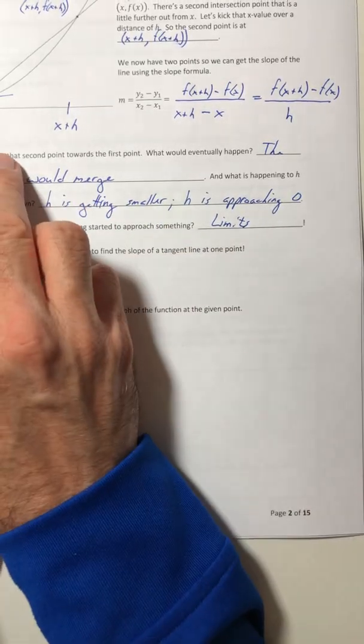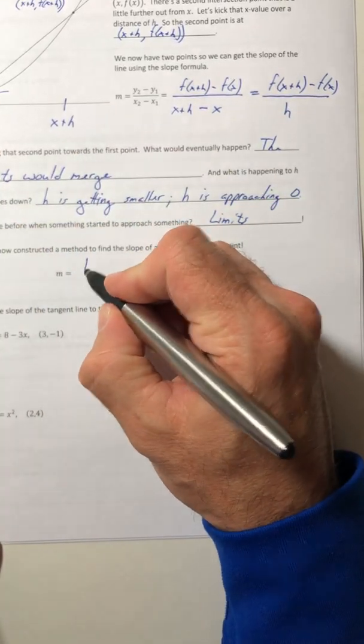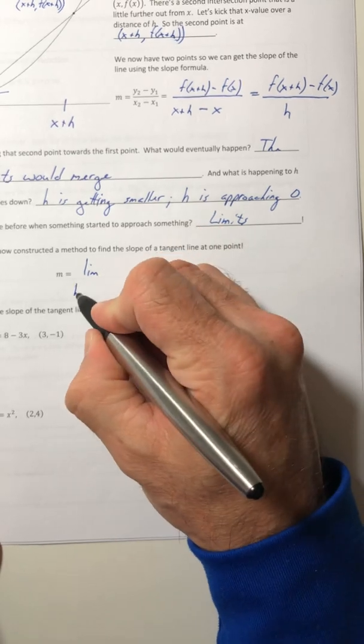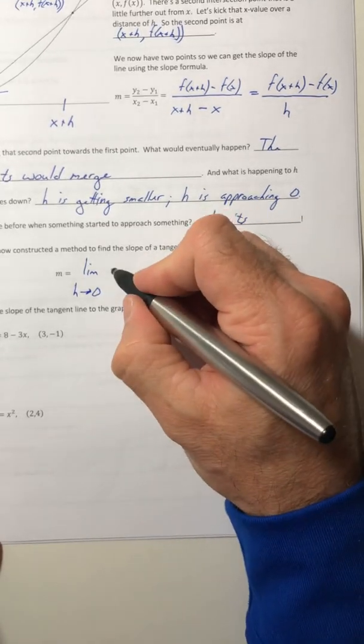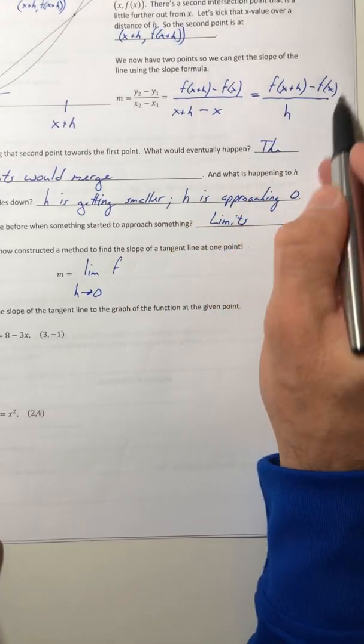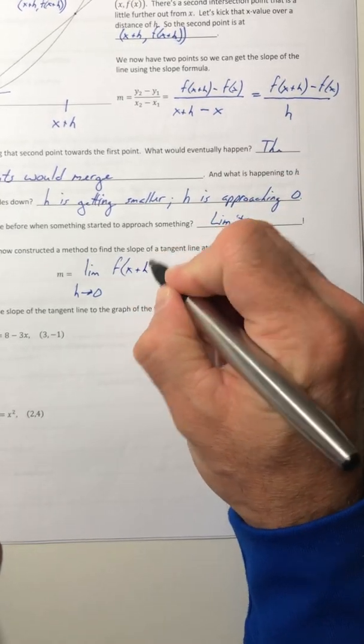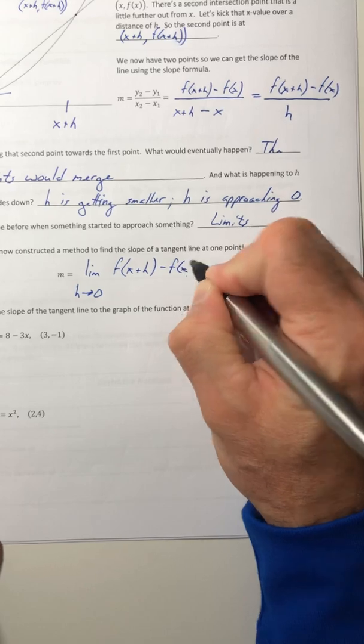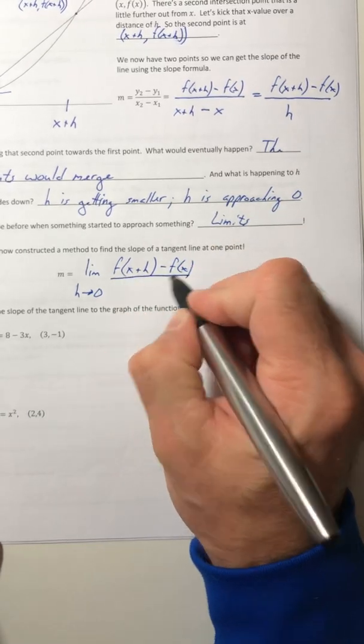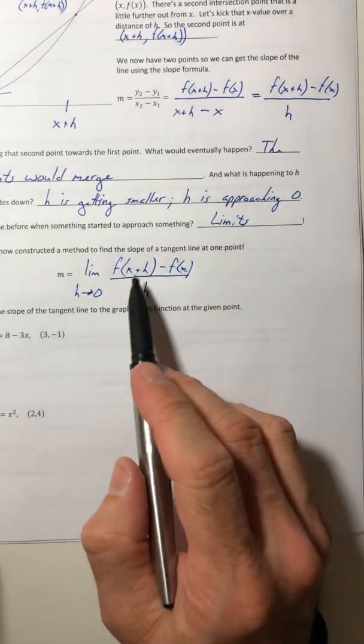So, the slope of the line at that one point is going to equal the limit as h approaches zero of this little slope formula we just came up with: f of x plus h minus f of x all over h.